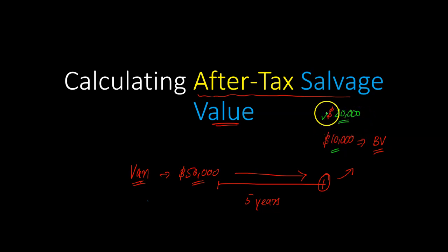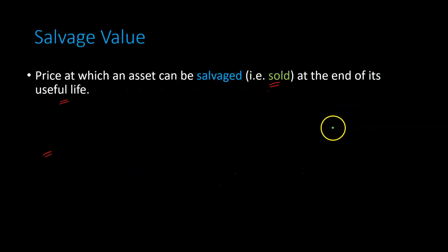So this $10,000 profit, this difference between what you're selling the asset for and what it is worth on the books, you owe taxes on this.